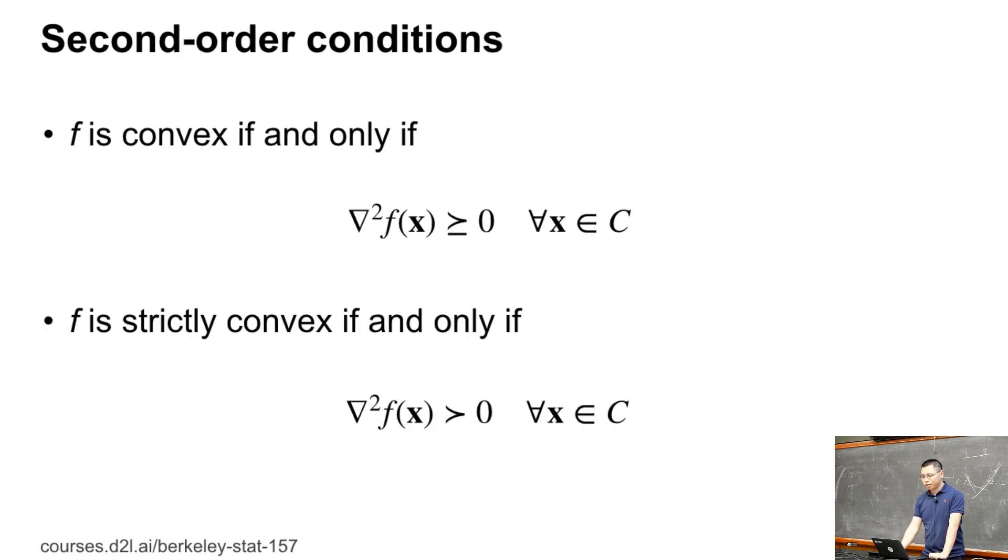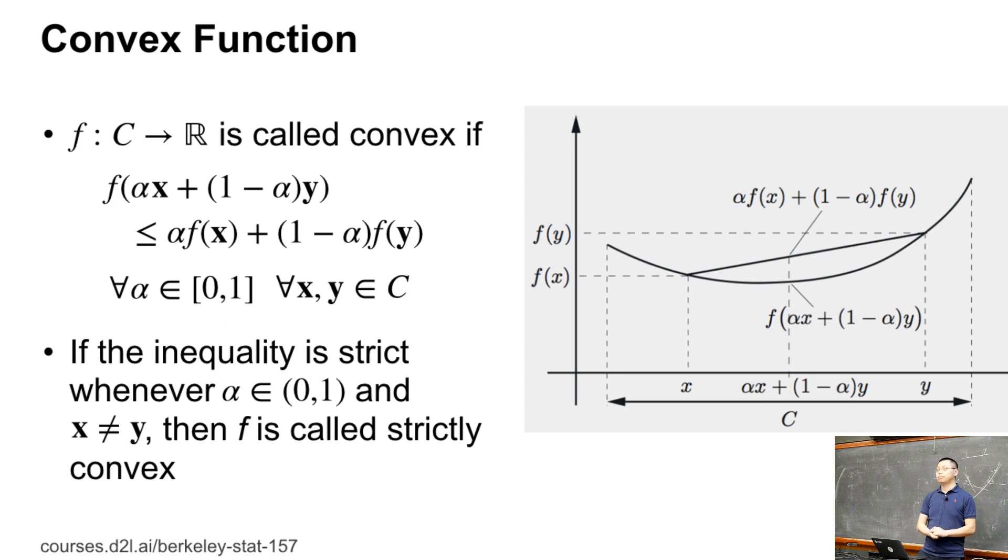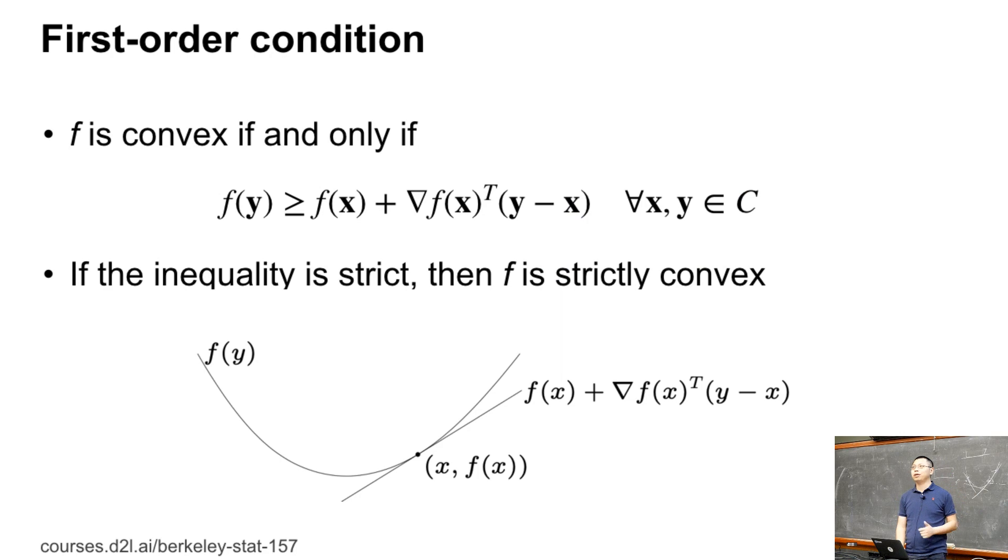The second-order condition: f is from n-dimensional space to single value, so the gradient is an n-dimensional vector. The second-order is an n by n matrix, which is symmetric. F is convex if and only if the Hessian matrix is semi-positive definite, which means the least eigenvalue should be greater than or equal to zero. If it's true convex, this Hessian matrix is positive definite, meaning all eigenvalues are greater than zero. We have three ways to judge if a function is convex: zero order, first order, and second order.